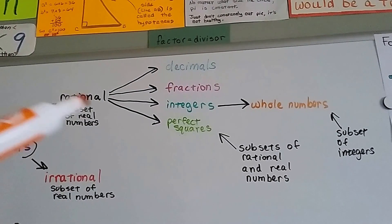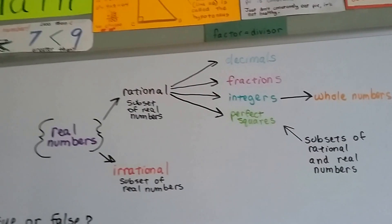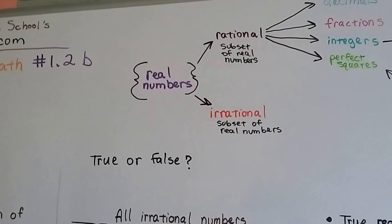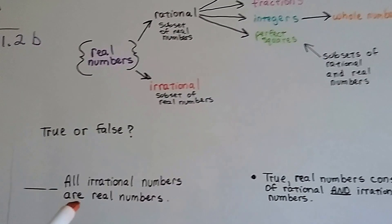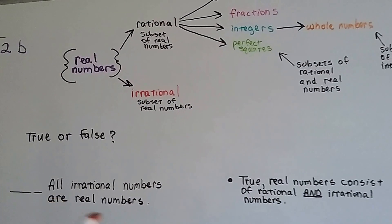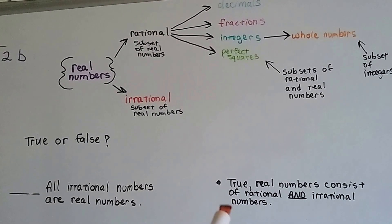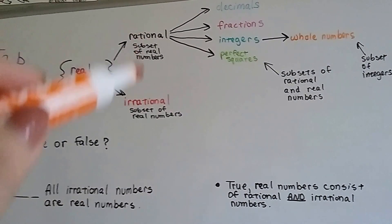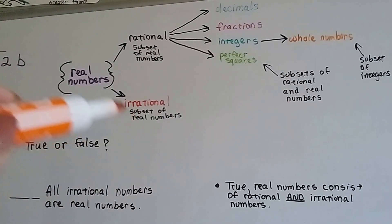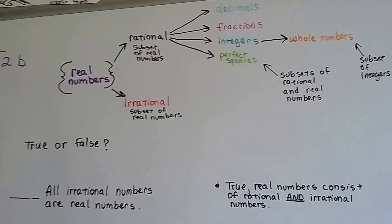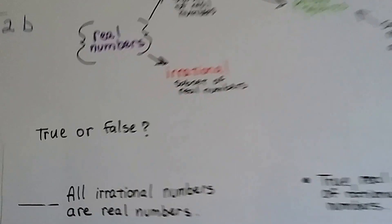So they're slowly breaking off more and more. True or false: All rational numbers are real numbers. That's true. True or false: All irrational numbers are real numbers. Real numbers consist of rational and irrational numbers, so irrational numbers are a subset — that's true.